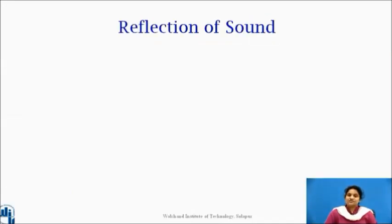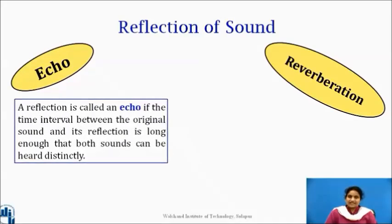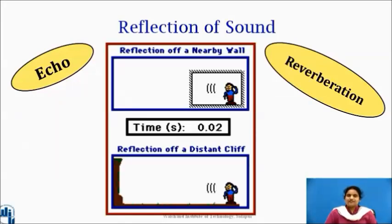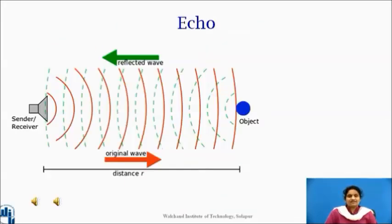The reflection of sound in an enclosed space leads to two important defects, namely echo and reverberation. A reflection is called an echo if the time between the original sound and its reflection is long enough that both sounds can be heard distinctly. If a room has lots of echoes that are very closely spaced in time so that they are not distinct, then this large number of echoes is known as reverberation. You can see in this image that with change in distance and time, how the generation of echo and reverberation occurs.